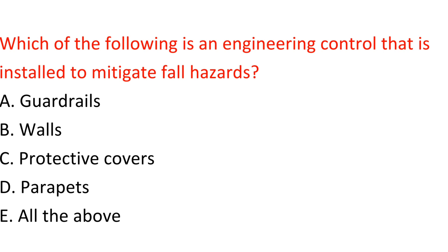Question: Which of the following is an engineering control that is installed to mitigate fall hazards? A. Guardrails. B. Walls. C. Protective covers. D. Parapets. E. All the above. Answer: E. All the above.